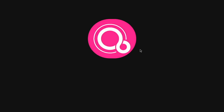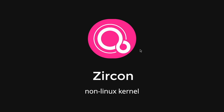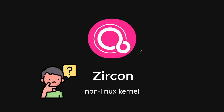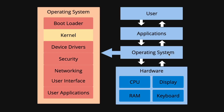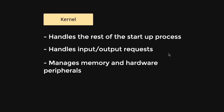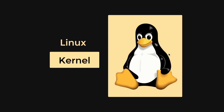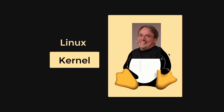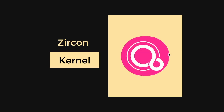Fuchsia is based on a non-Linux kernel called Zircon. What a kernel does is that it handles the startup process, input-output requests from other programs, and it manages memory and hardware peripherals such as keyboards, monitors, printers, and speakers. A Linux kernel is a widely used kernel created by Linus Torvalds. Fuchsia, however, is using its own kernel called Zircon.